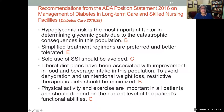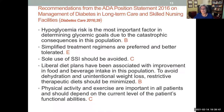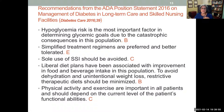There is a separate position statement from 2016 for management of diabetes in skilled nursing facilities and long-term care. Key recommendations include reducing hypoglycemia risk, promoting simplified regimens, avoiding the sole use of sliding scale insulin, liberalizing diets with carbohydrate consistency, avoiding dehydration and weight loss — removing restricted diets — and promoting whatever physical activity is possible.